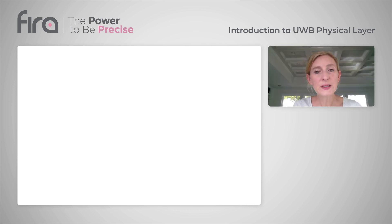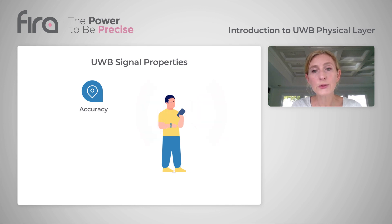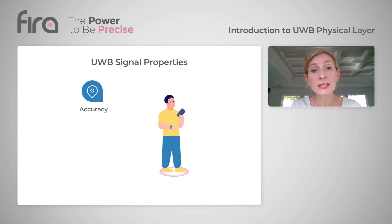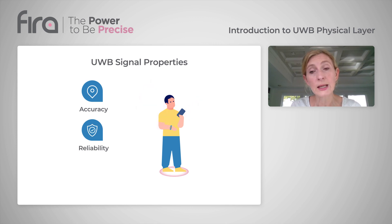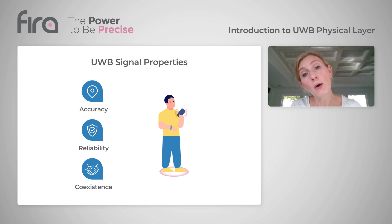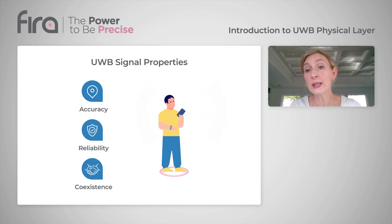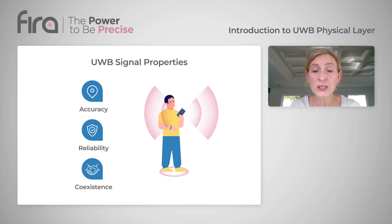As we saw, UWB's pulse technology allows determining the distance between peer devices with a very high degree of accuracy and with resilience to real-world multipath environments. And its broad spectrum and low-power footprint makes it easy to coexist with other wireless technologies operating in the same spectrum.